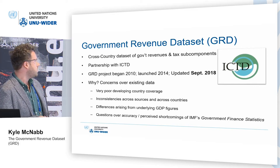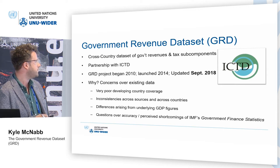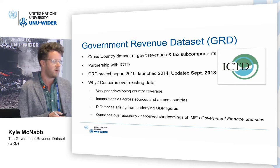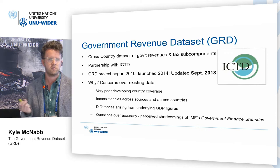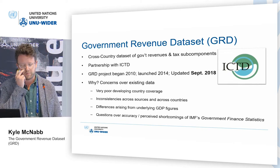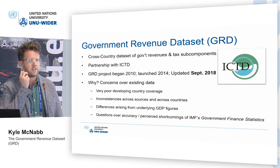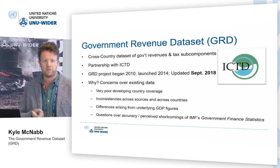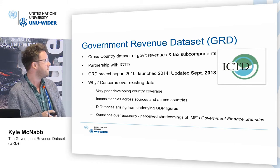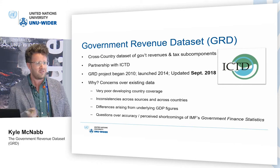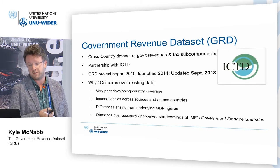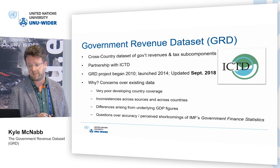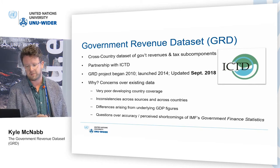I've mentioned some of the motivating concerns already. A lot of the time, if you were to compare data from two different sources, not only might the tax figures be different, but if they're expressed as tax ratios, the GDP figure used as the denominator would also be different. And this creates a lot of confusion for researchers, even if you're just displaying a tax ratio.